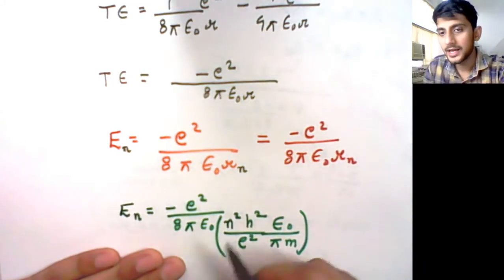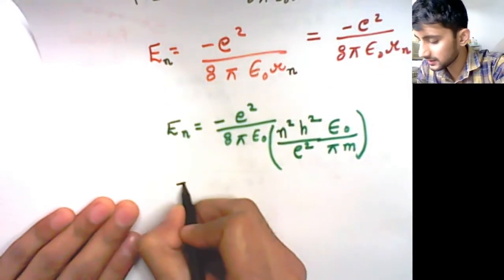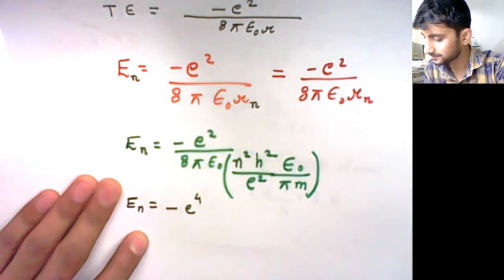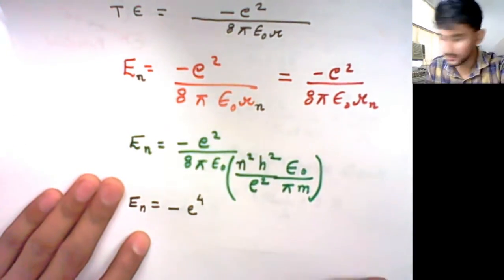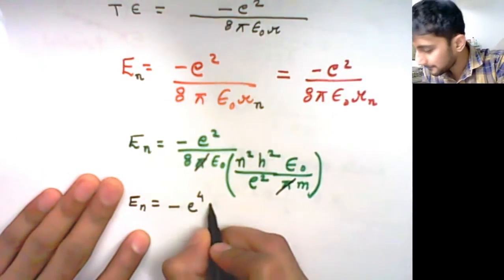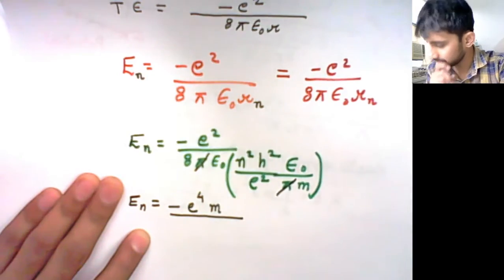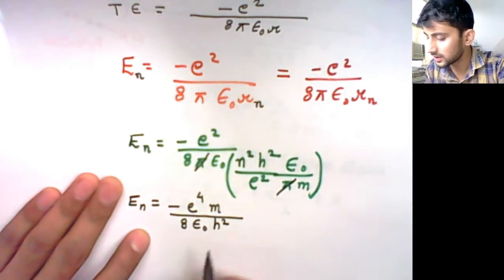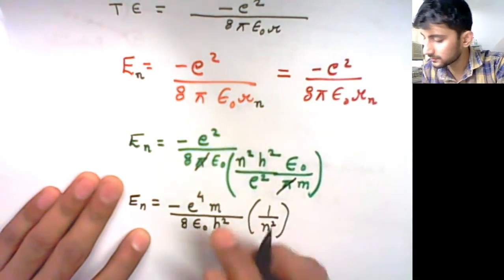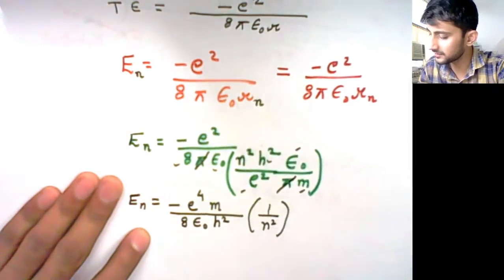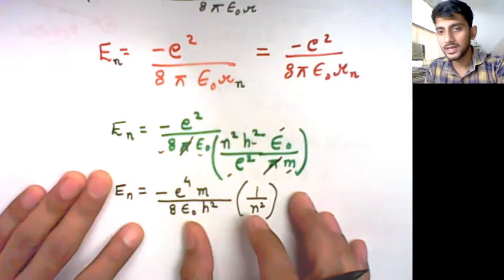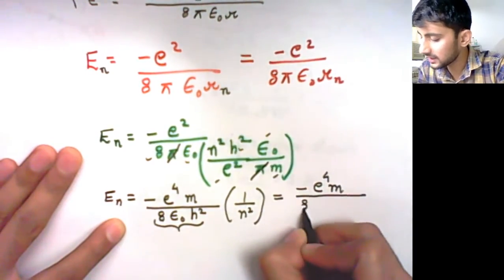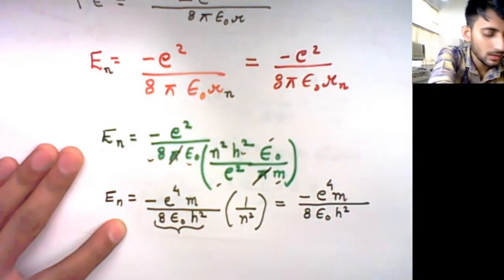If we arrange e-squared terms, En equals −me⁴ divided by 8ε₀²h², multiplied by 1/n². Pi cancels with pi, and m and h remain. So the full expression is: En = −(me⁴)/(8ε₀²h²) × (1/n²). This constant part gives us the energy formula for the nth level.